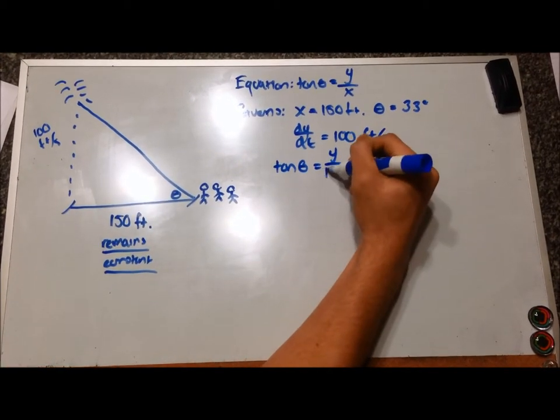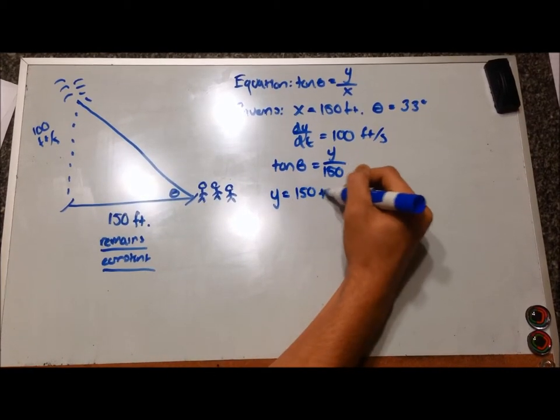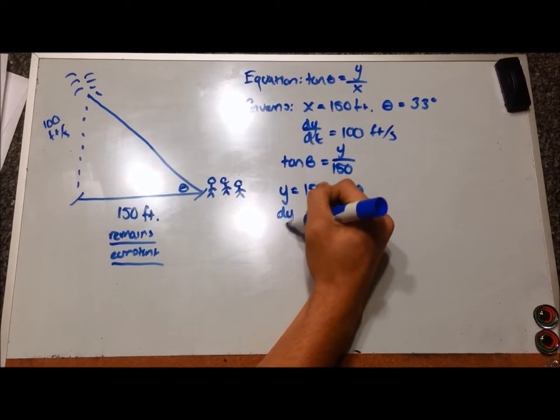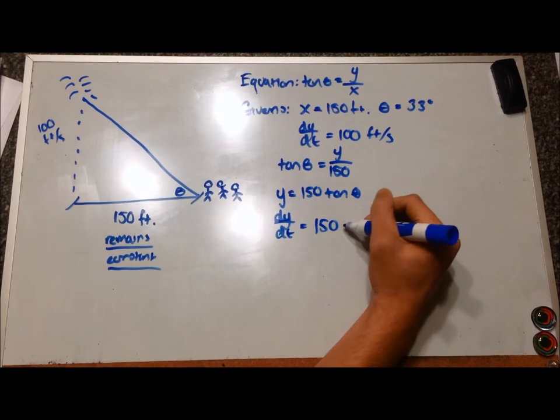Now, using your equation from earlier, tangent of theta is equal to y over x. Plug in x because it's a constant. Next, modify it so that it's y equals 150 times tangent of theta so that it's easier to derive.